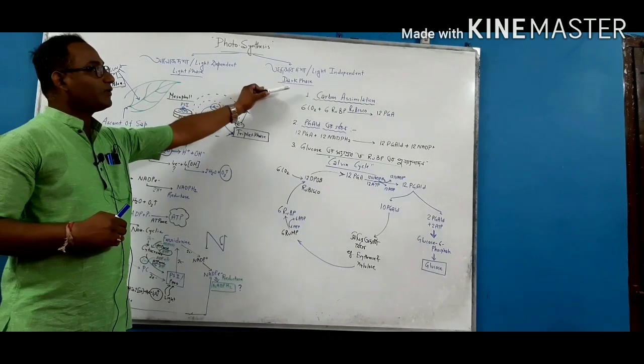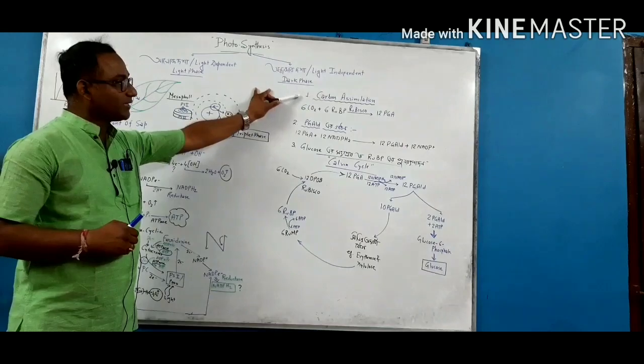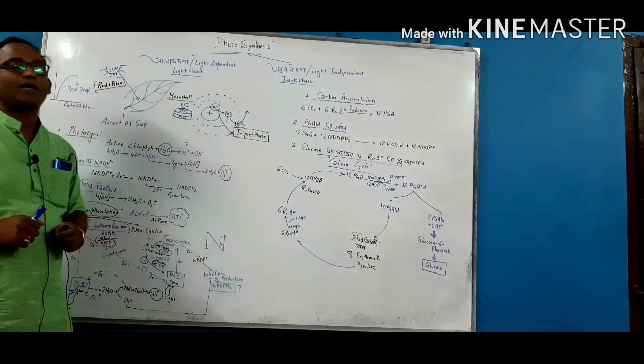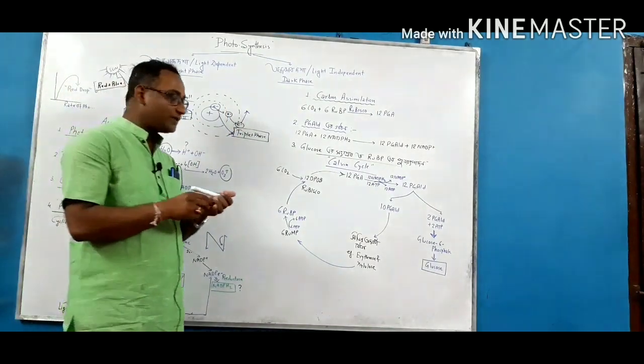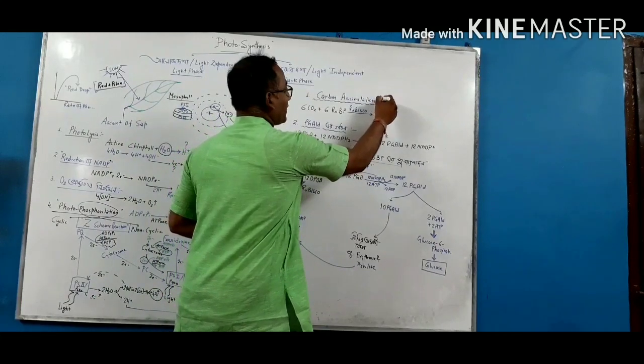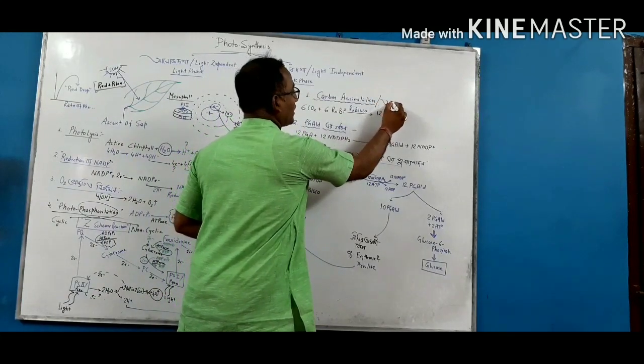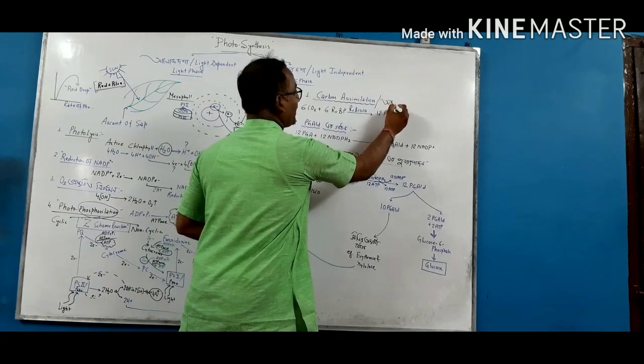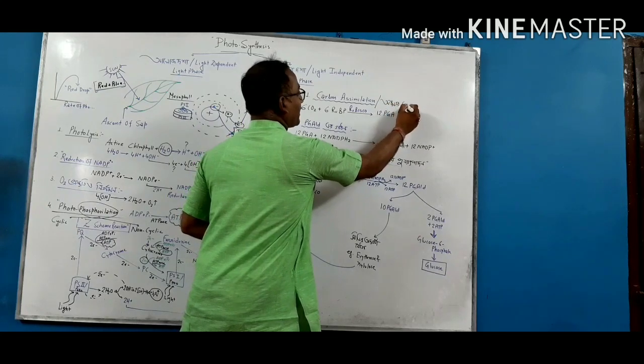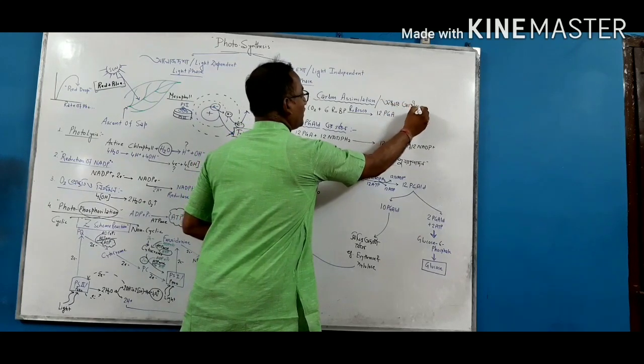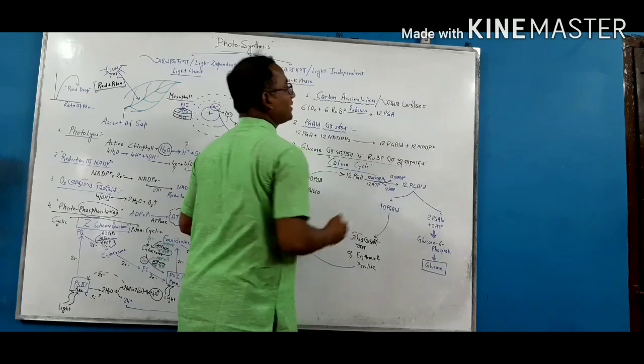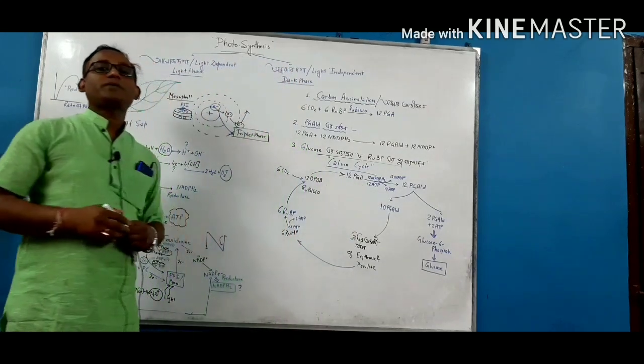The first step is carbon assimilation. Carbon assimilation is very good in Bangalore. The second step is carbon. The carbon is always very good in Bangalore. And the third step is carbon.